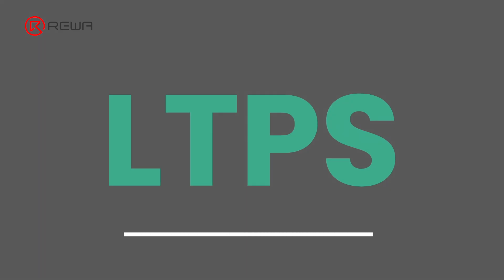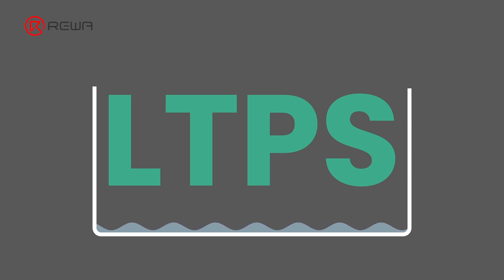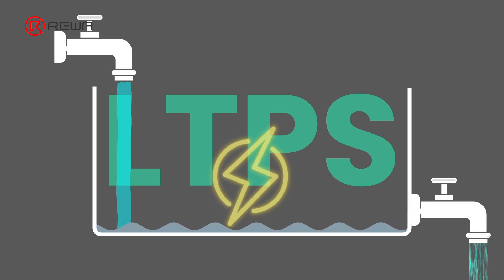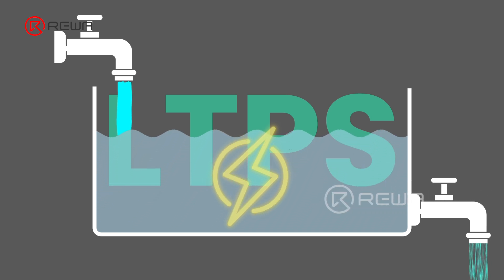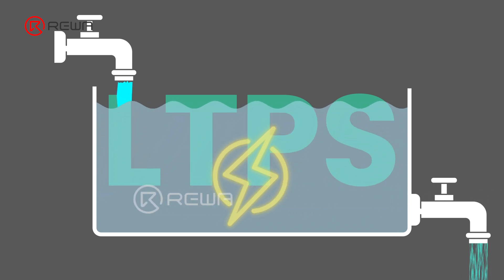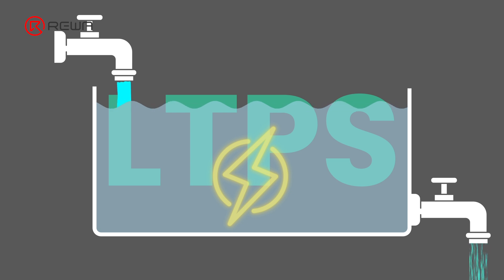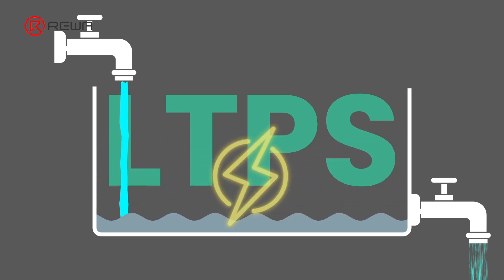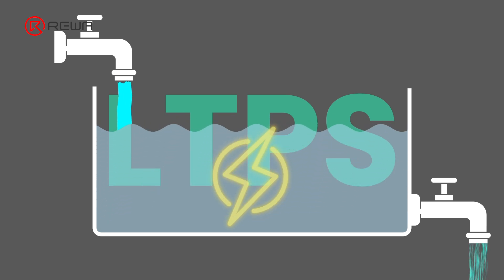The LTPS to LTPO upgrade can be compared to managing a water pool, where electric current is represented by water. LTPS: imagine a pool that fills quickly — high electron mobility — but leaks water just as fast, representing capacitor leakage. This means you need a constant and high water input, higher voltage, to maintain the water level for brightness and high refresh rate. When you try to display a low refresh rate, the pool drains too quickly to sustain the picture, causing flickers due to unstable water flow.